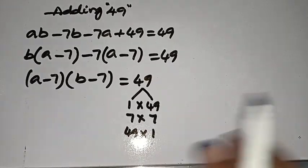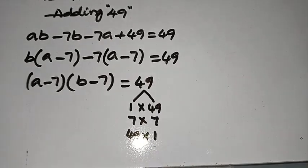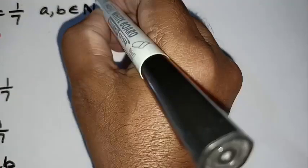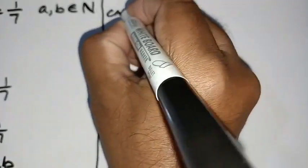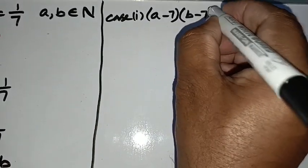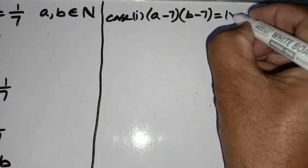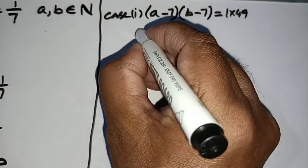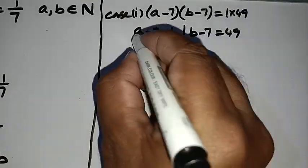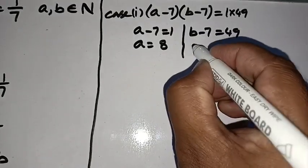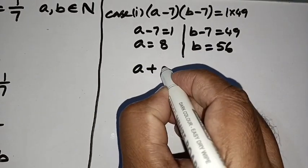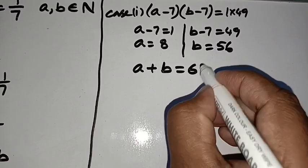In Case 1, A minus 7 times B minus 7 equals 1 times 49. So A minus 7 equals 1 and B minus 7 equals 49, giving A equals 8 and B equals 56. Therefore A plus B equals 8 plus 56, which is 64.